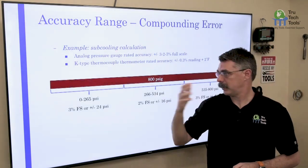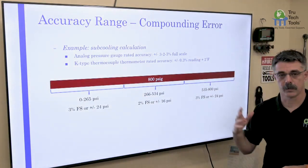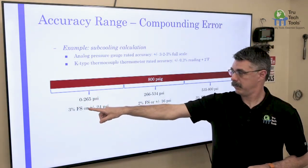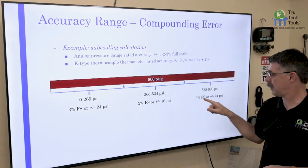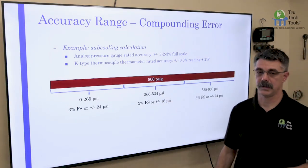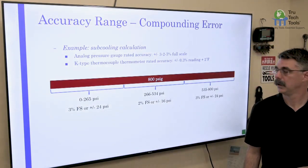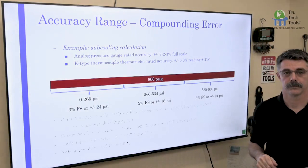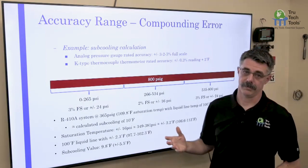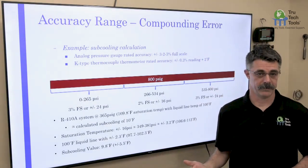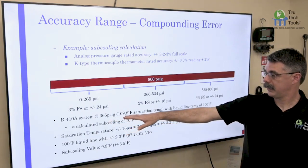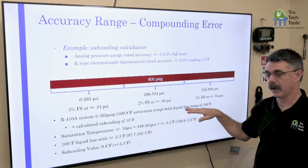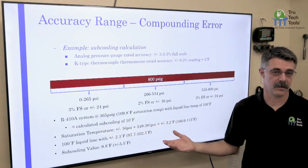For a typical 410A pressure gauge with an 800 psi high-side range, in thirds: the ends are plus or minus 24 psi (3%), the middle is plus or minus 16 psi (2%). Taking a 410A system at 365 psi gauge, that's 109.8°F — call it 110°F saturation temperature. With a liquid line temperature of 100°F, our calculated subcooling is 10 degrees. That's easy math.